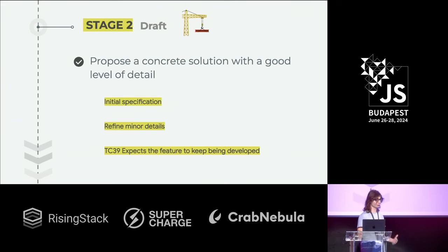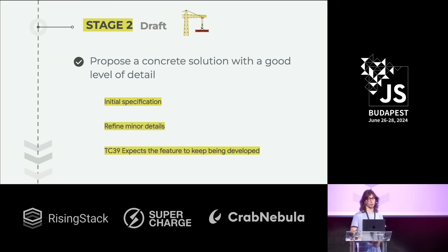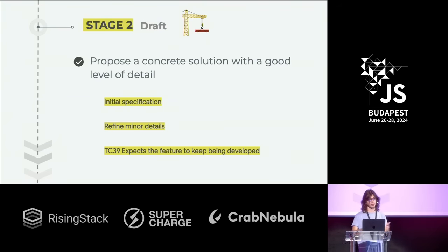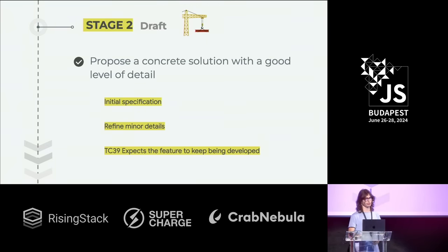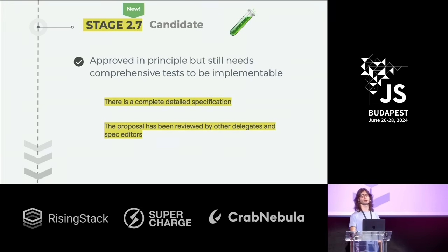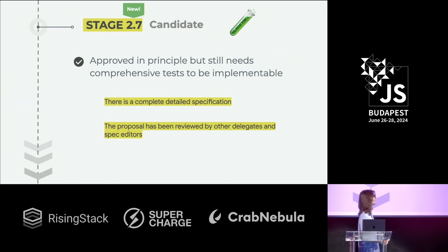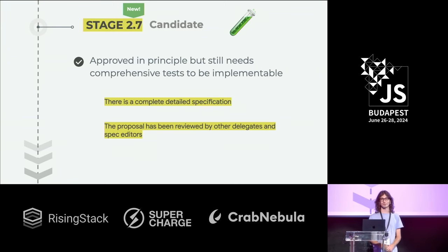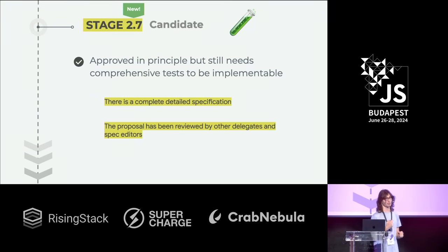Once we refine all the minor details and have a complete specification, we go back to the committee and say: I think this is the best solution for these reasons. The committee all has to agree — yes, this is indeed the best. And we can promote the proposal to Stage 2.7. We are apparently not very good at counting, so we didn't remember what number comes after 2. The proposal is done at this point and can almost be implemented.